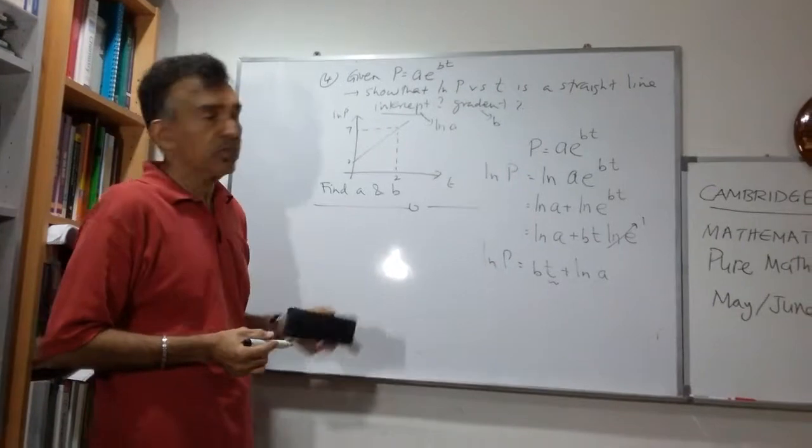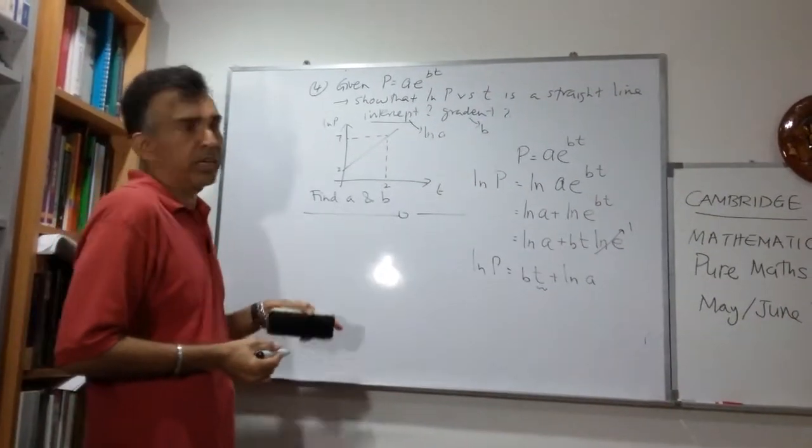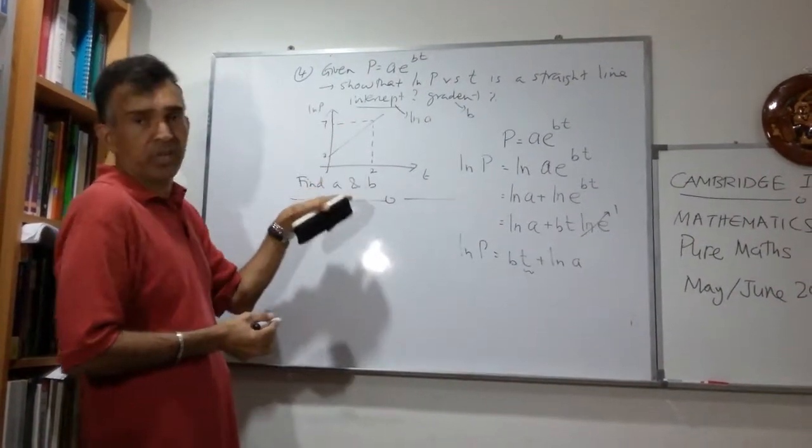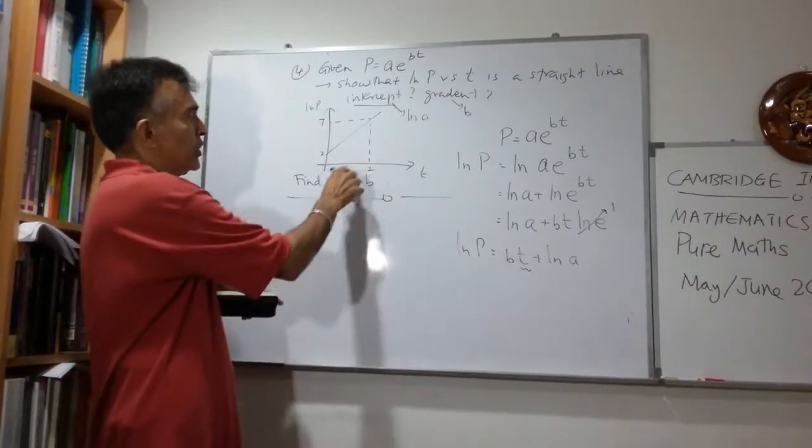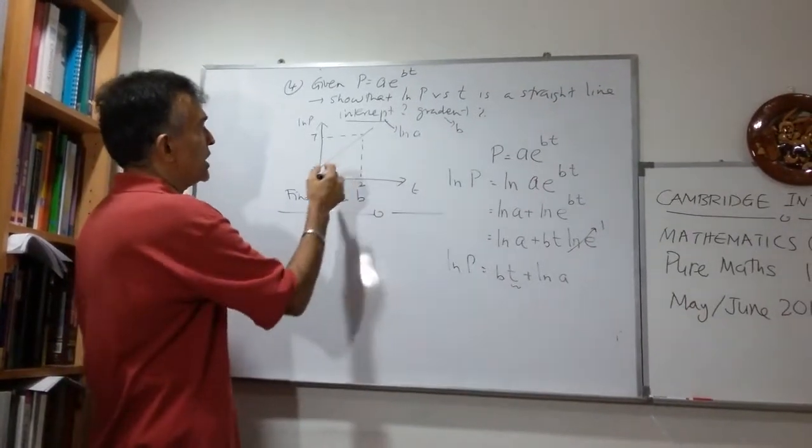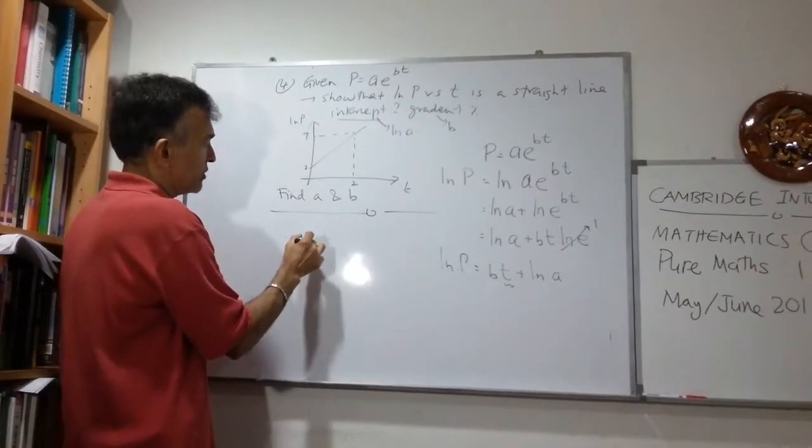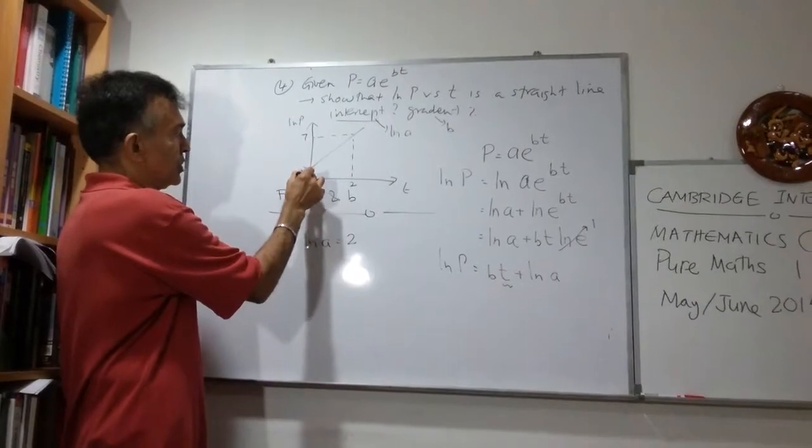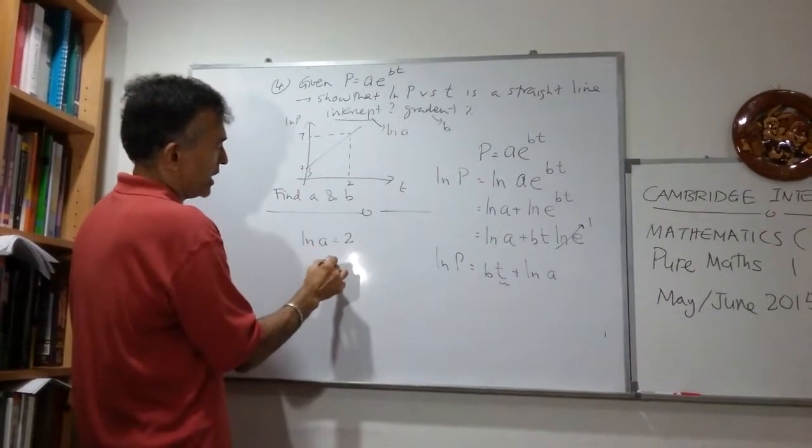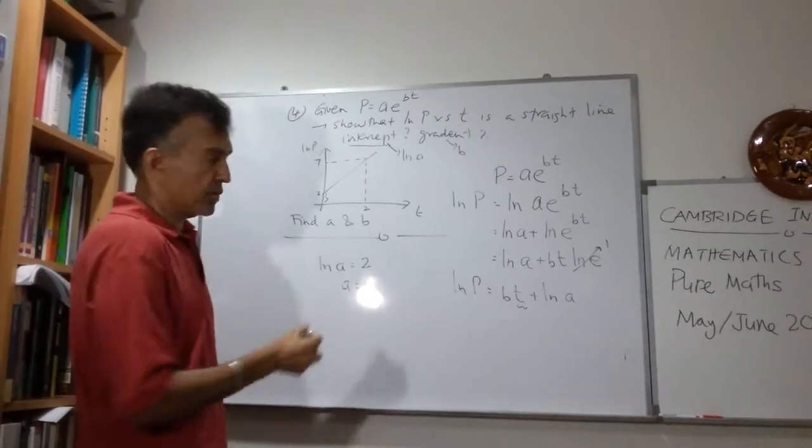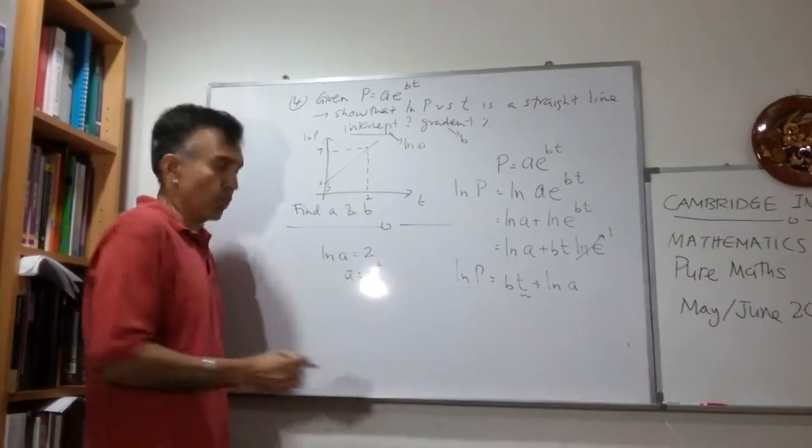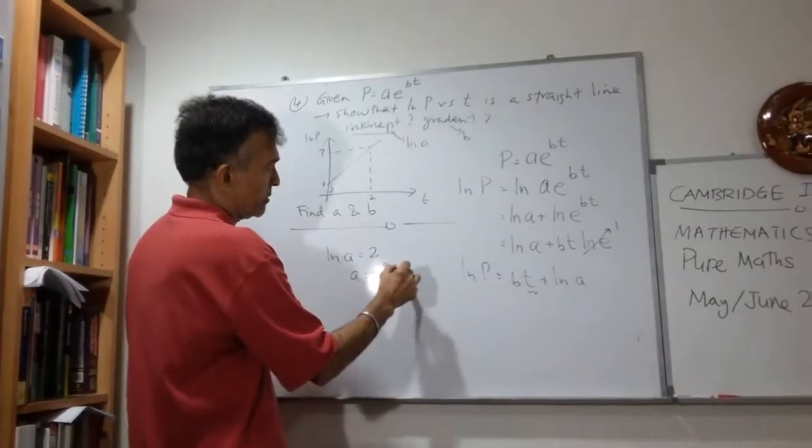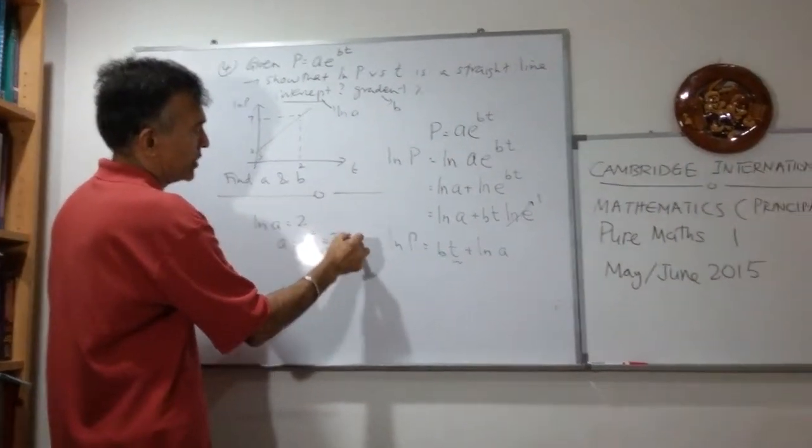And then they gave us a picture in the question. They gave us a picture with some numbers on it and asked to find A and B. They gave us this graph with a straight line and the numbers in. So we know the intercept is log A. So let's write: log A equals 2. You can see this is log A is 2. And therefore we can write A as equals to, using the definition of logs, bring the base up, raise this up, it becomes E squared. And we are done. A equals to E squared. E squared is about 7.39. You can use a calculator.